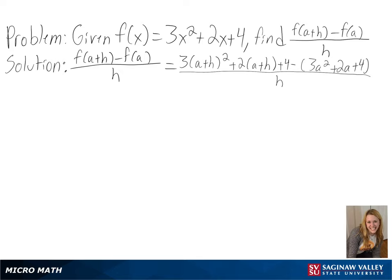Next, to simplify, we will first distribute out our a plus h squared, and then our negative sign.